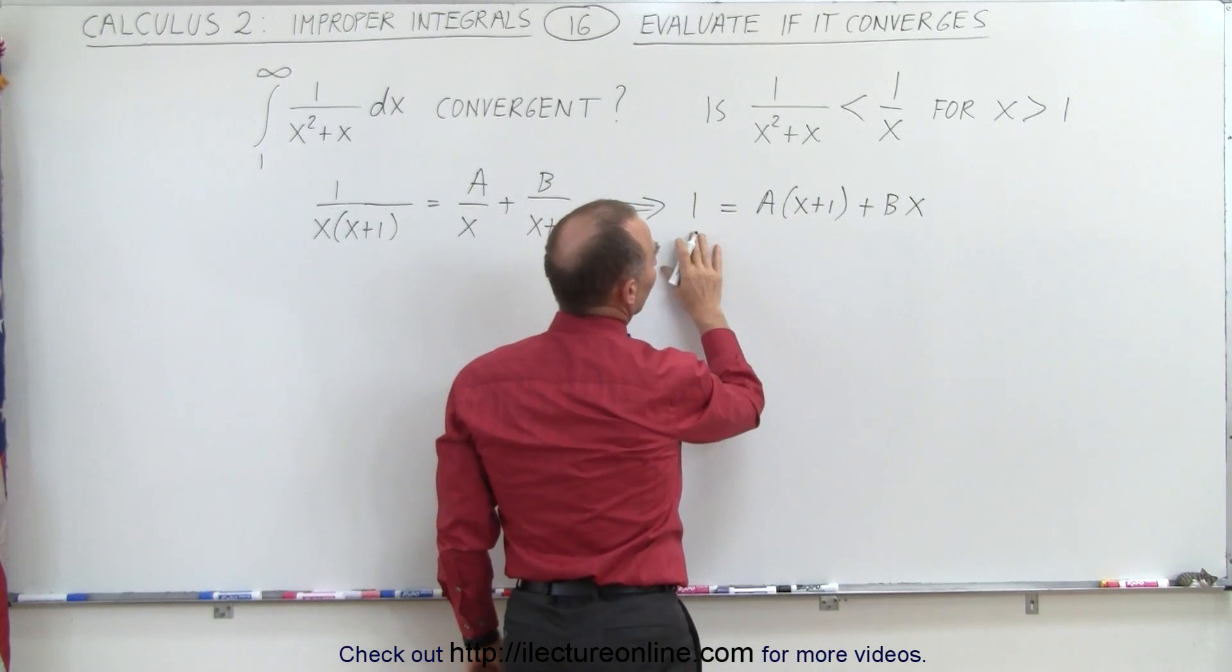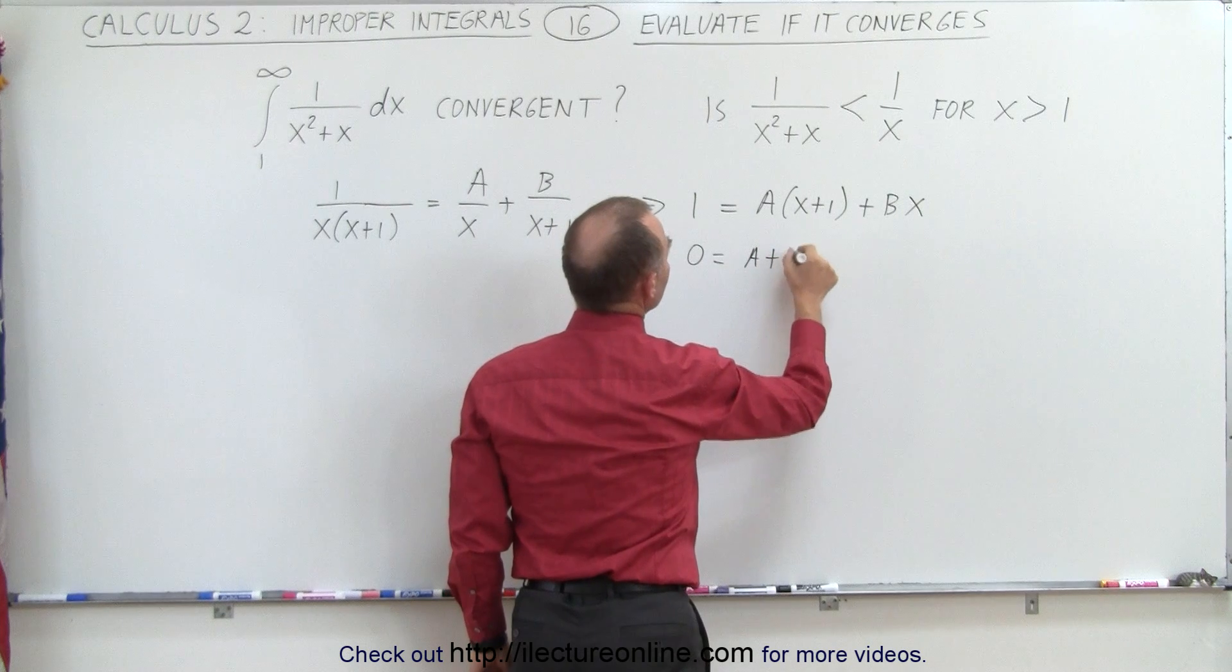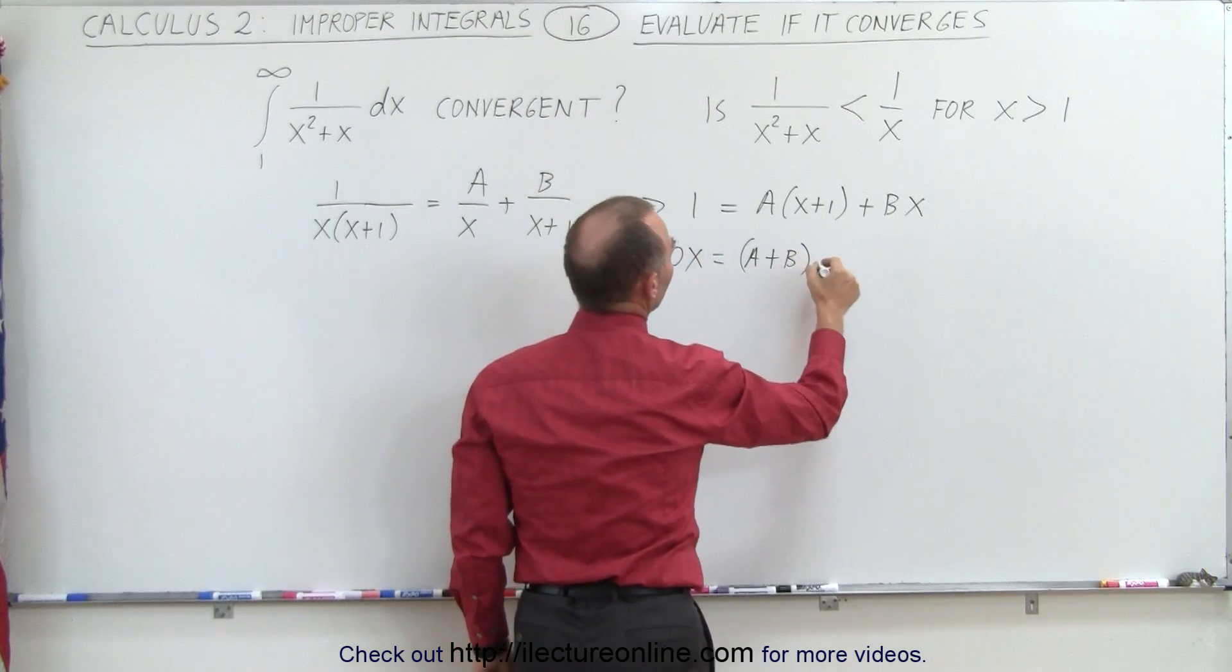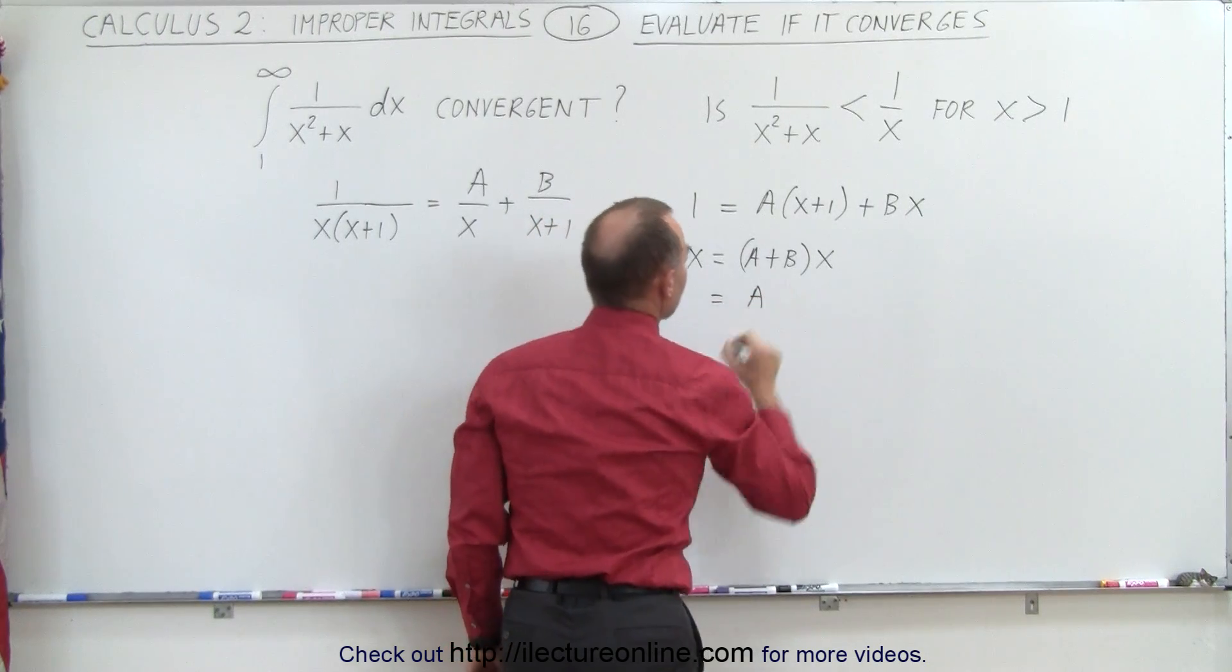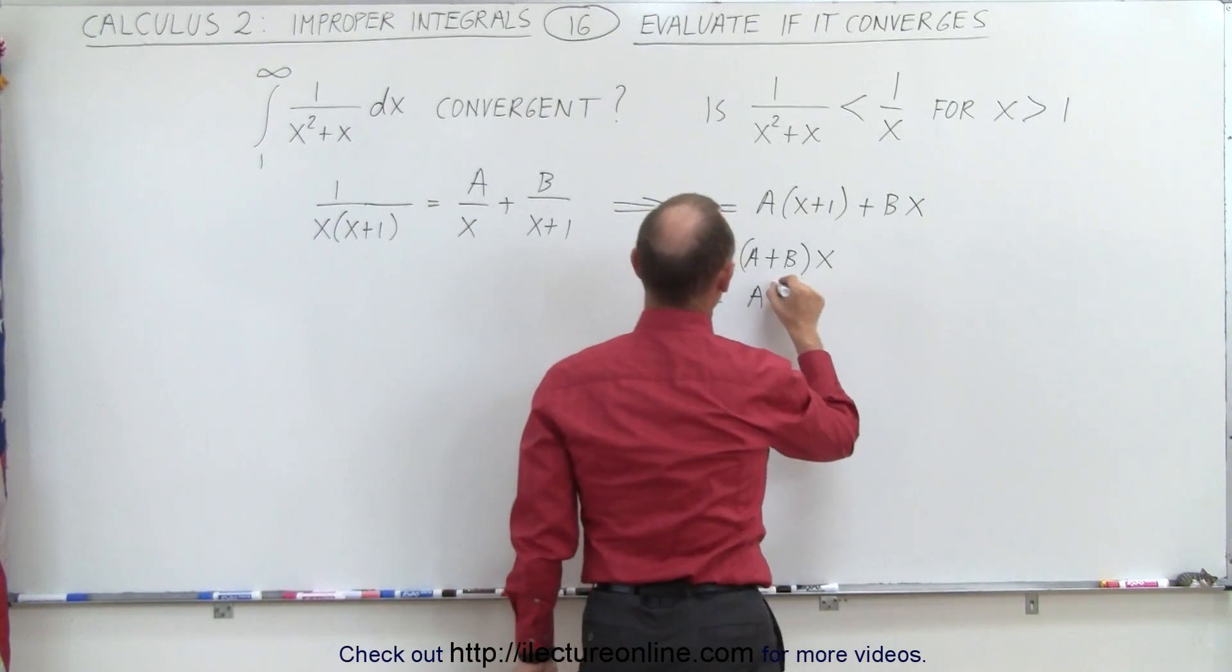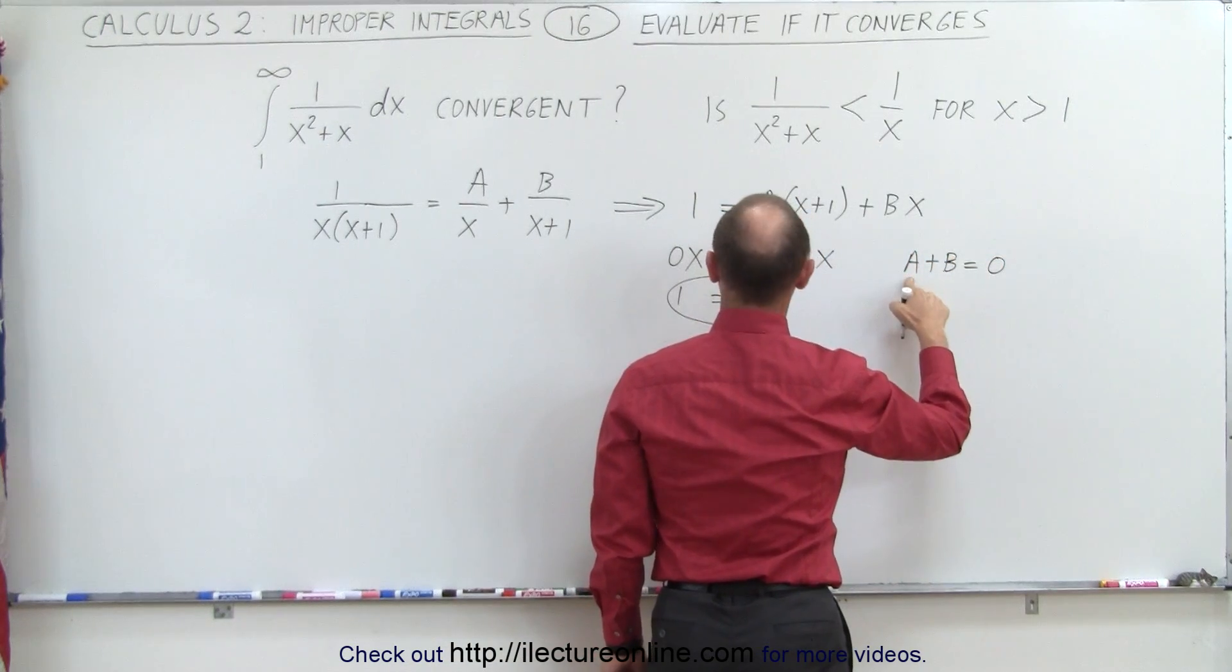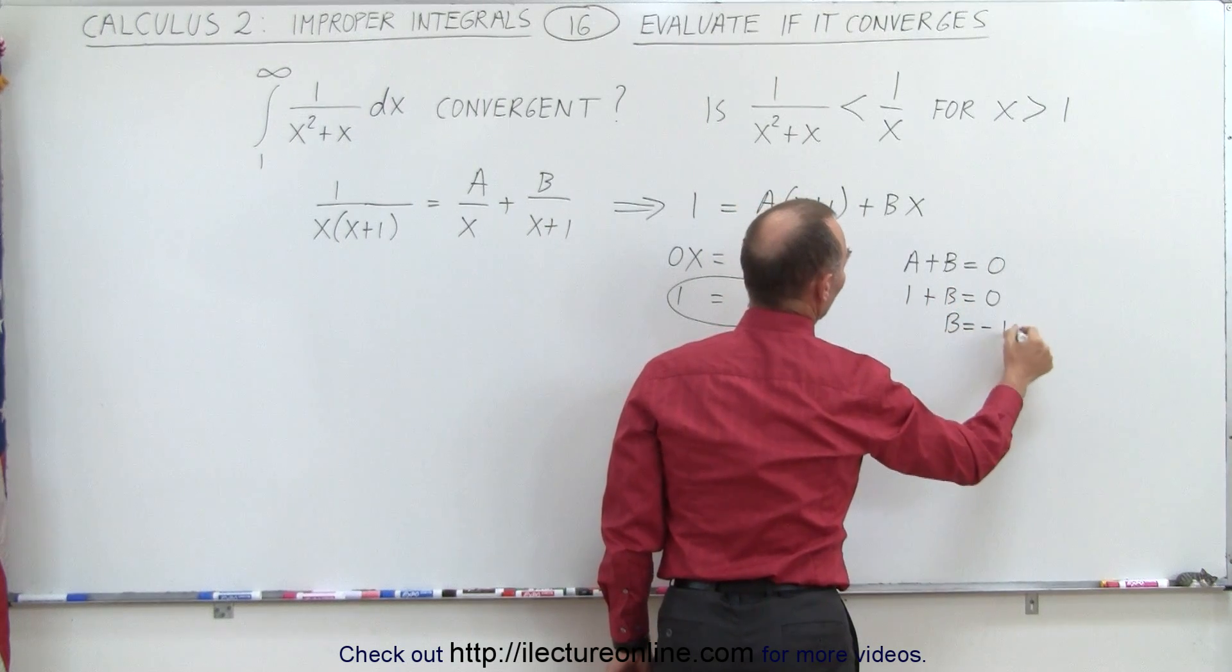This means that we have 0 is equal to A plus B times x, or 0x is equal to A plus B times x, and 1 is equal to A. From that, we can determine that A is equal to 1. And since A plus B is equal to 0 and A is equal to 1, we have 1 plus B equals 0, or B equals negative 1.